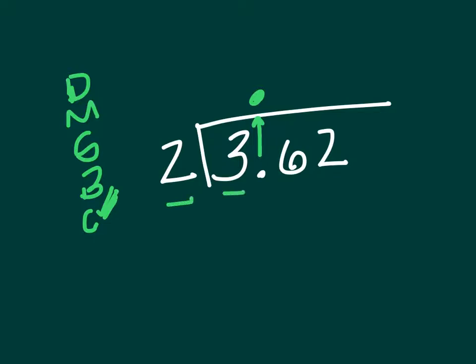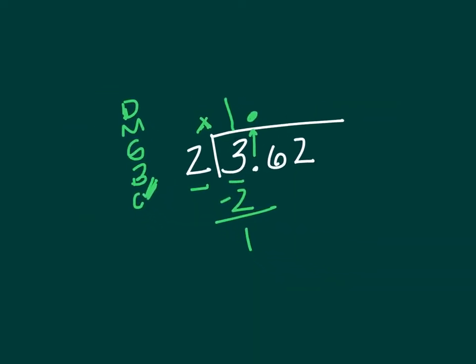Okay, so 2 goes into 3 one time, multiply, 1 times 2 is 2, subtract, 3 minus 2 is 1. Let's get smaller so we can see what we're doing.